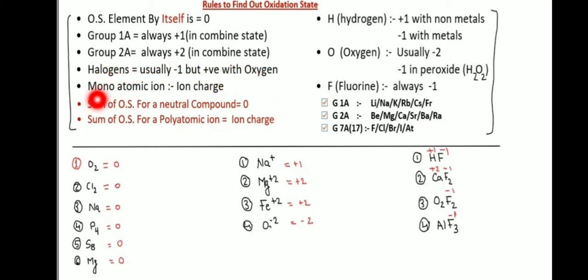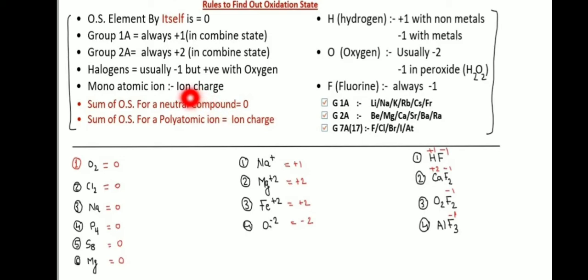For monatomic ions, oxidation state equals the ion charge. For example: Fe2+ means plus two charge, O- means minus one charge, Cl- means minus one charge.